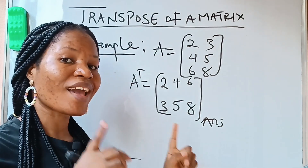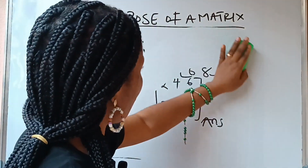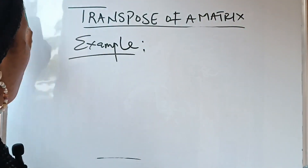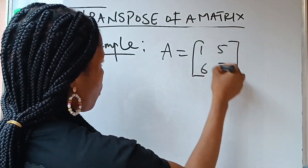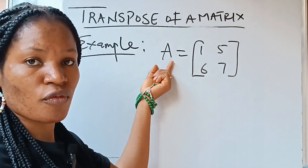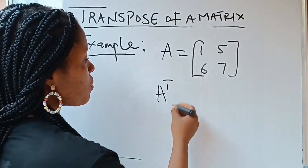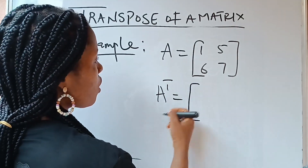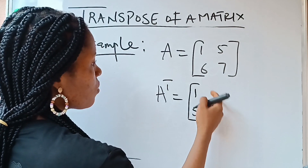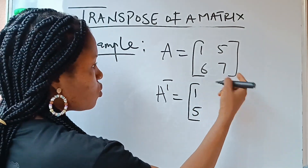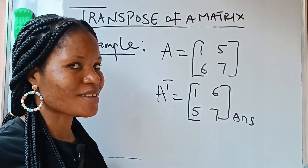One more example before we go into the next subtopic, which is the determinant of a matrix. Let's do a 2 by 2. If you have A equal to [1, 5; 6, 7], and you are asked to find A transpose — A transpose is equal to: 1, 5 was your first row, turn it as your first column. 6, 7 is your second row, turn it as your second column. And this becomes your answer.